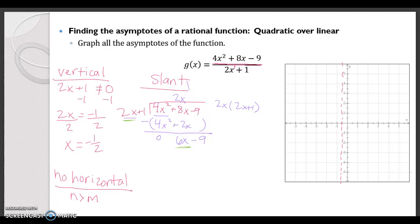Now 2x goes into 6x how many times? 3. So we get 2x times 3 is 6x plus 3 and I'm subtracting all of this. So my remainder ends up being negative 12, but what is the equation of my slant asymptote? It's going to be y equals my quotient and here's my quotient 2x plus 3.